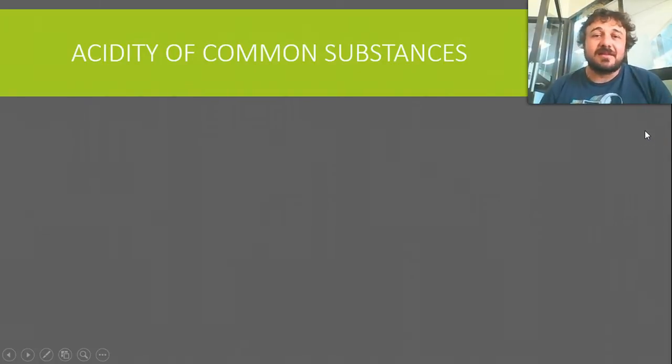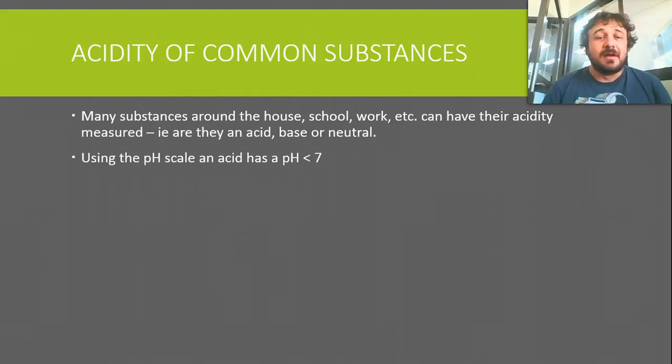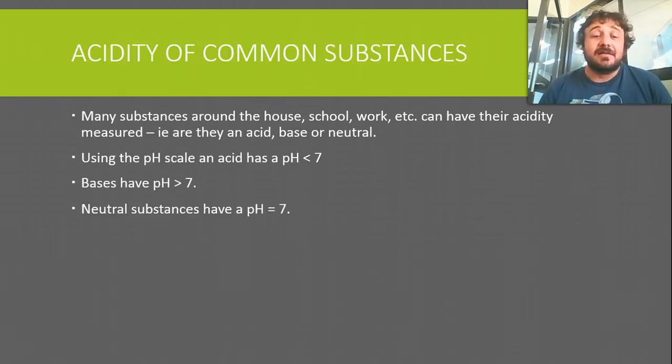Alright, so the acidity of common substances. Basically, pretty much everything we use, whether it's around the house, school, work, it can have its acidity measured or its pH measured, and it is either an acid, base or neutral. Using the pH scale, pH of less than 7 is an acid, more than 7 or greater than 7 is a base, and neutral substances are 7 on the dot.